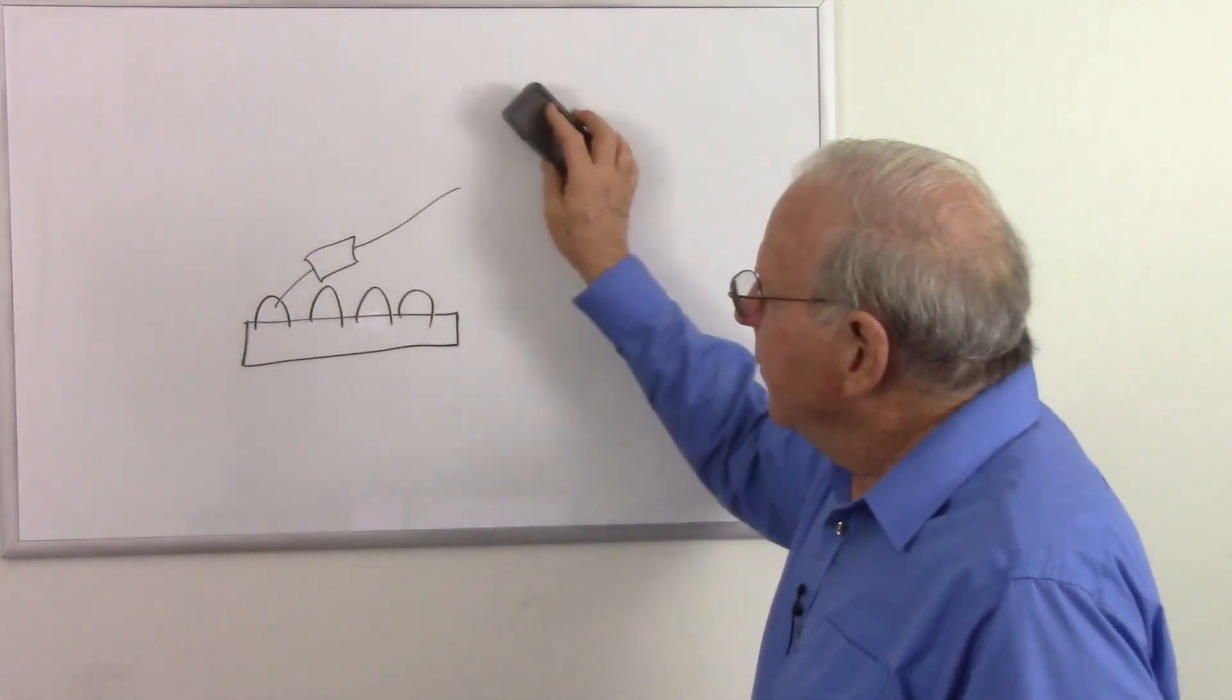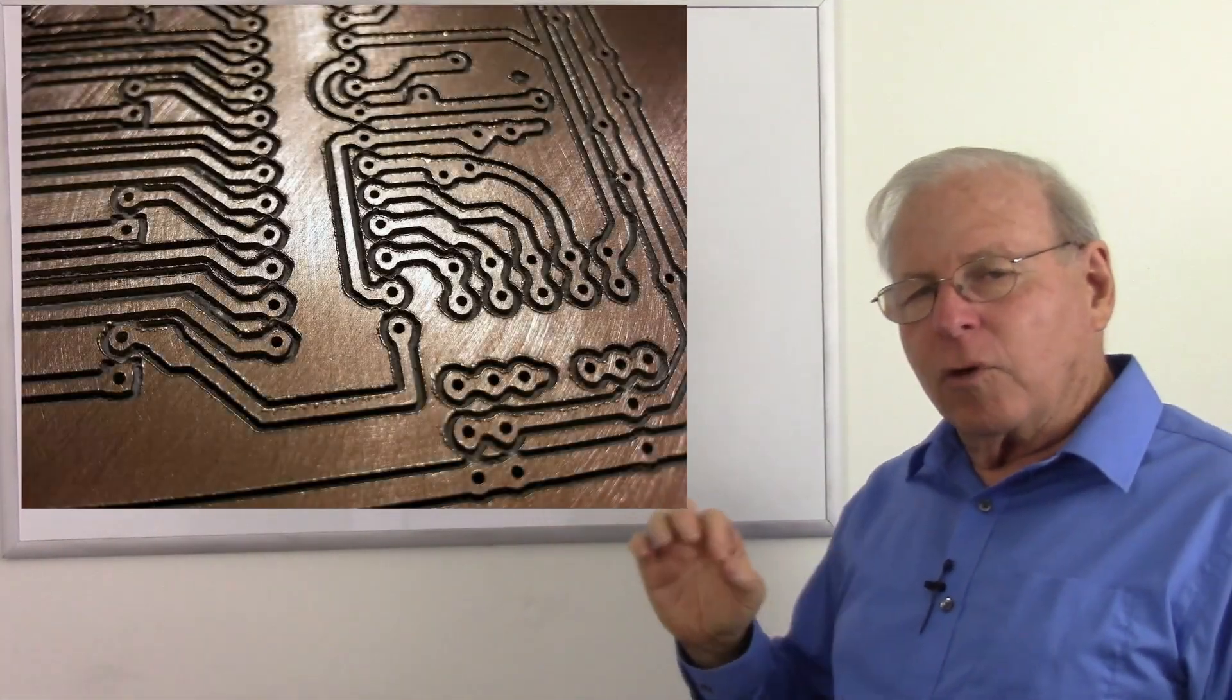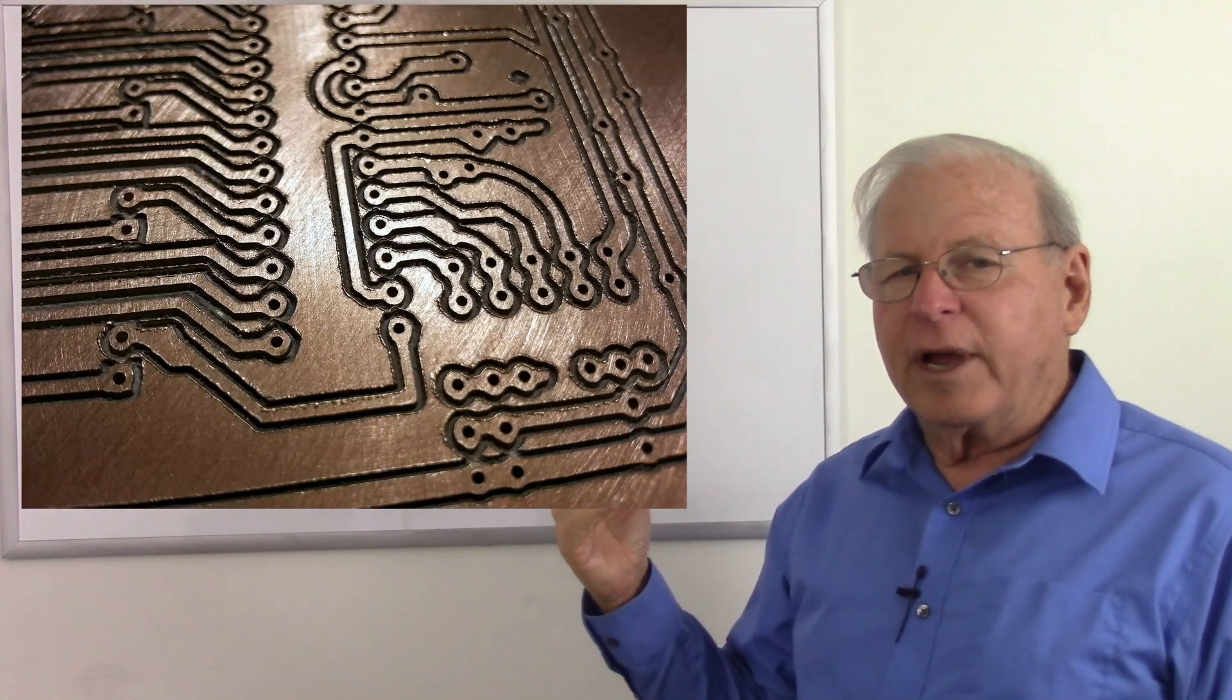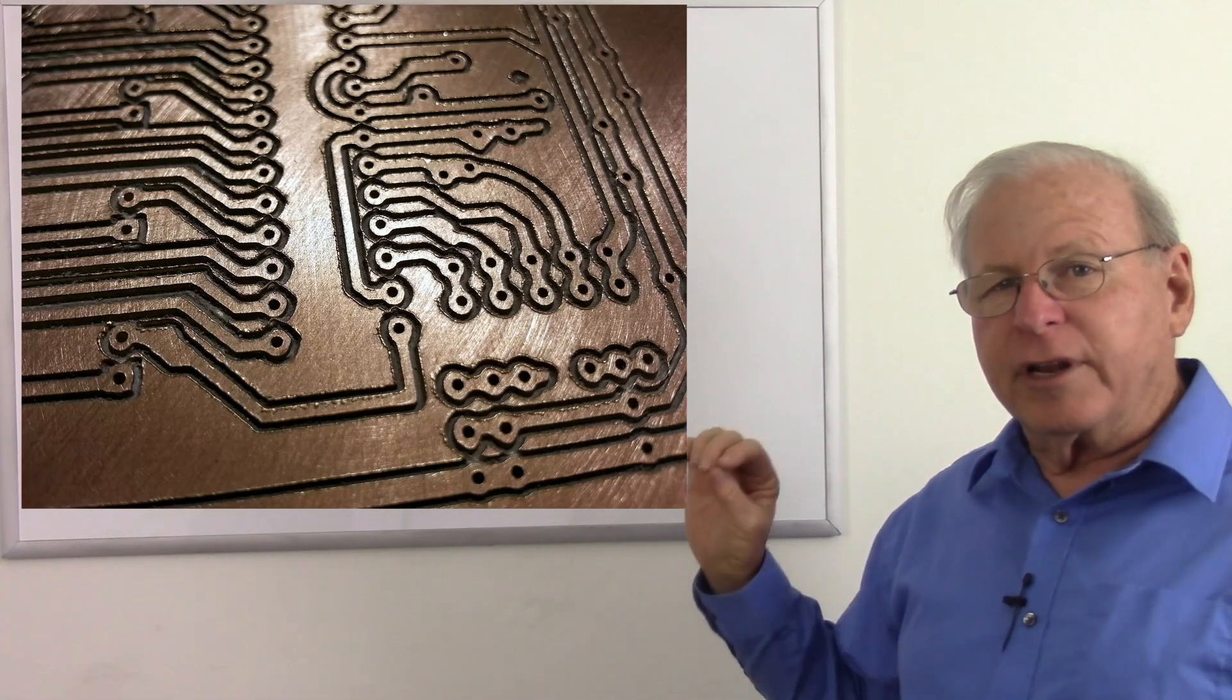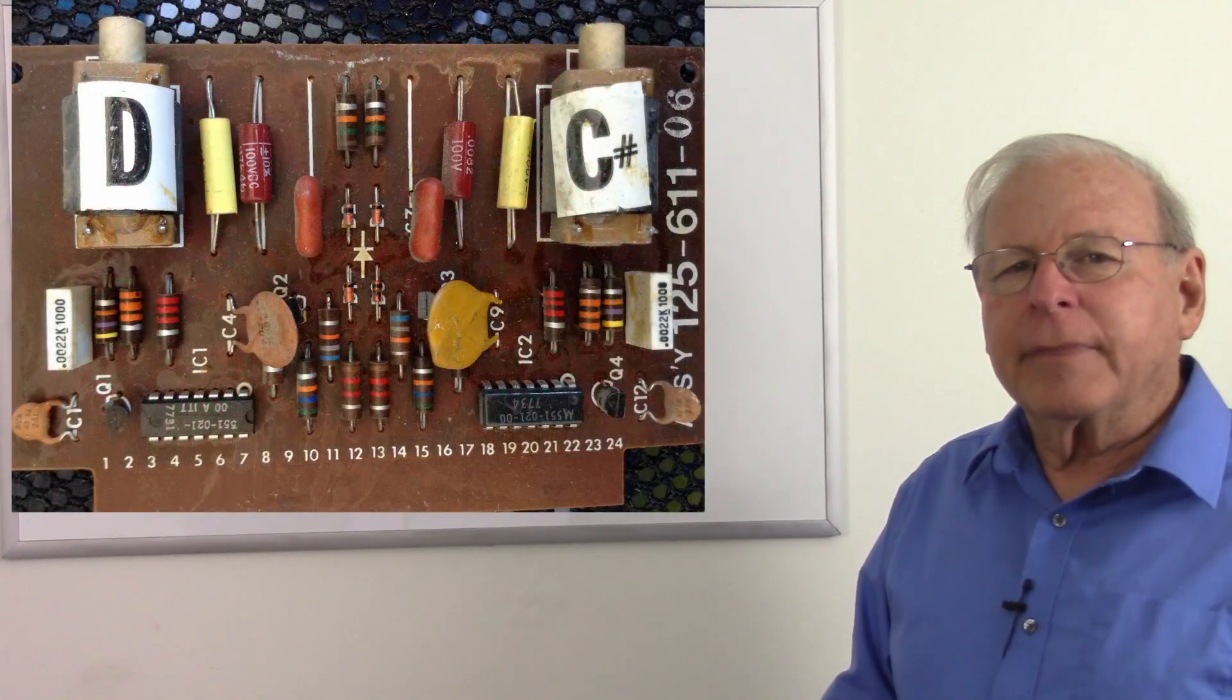And later on the printed circuit board was developed. This is where we have a copper clad board that has holes drilled in it where we can put component leads through the holes and then we etch away the copper that's unneeded to make traces around that board to connect the components together, solder the components to the proper places on the board, and you have a circuit.